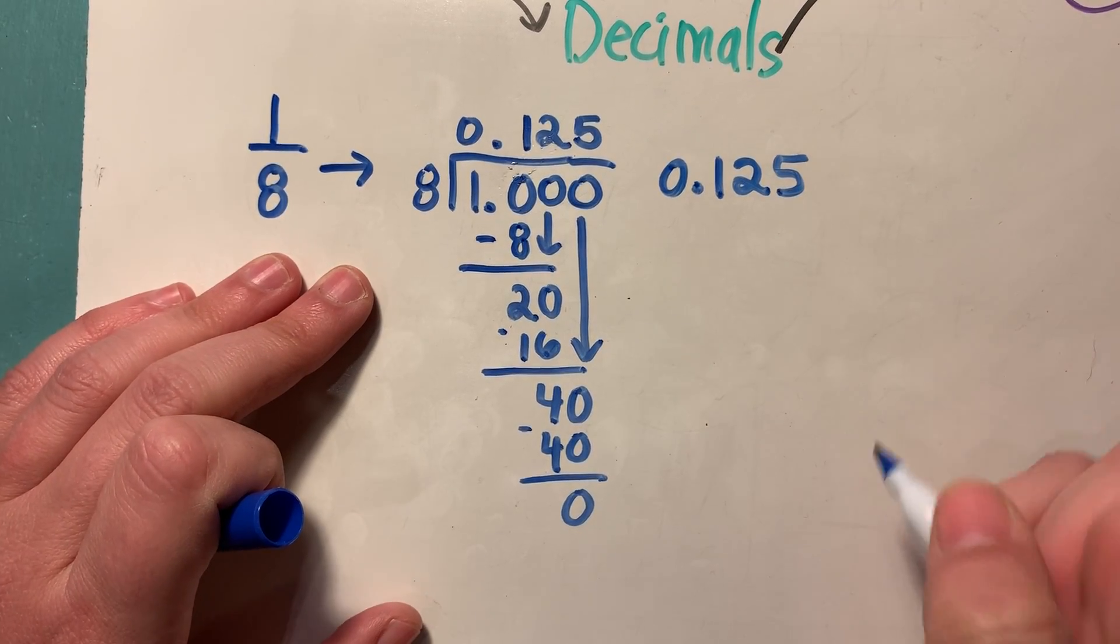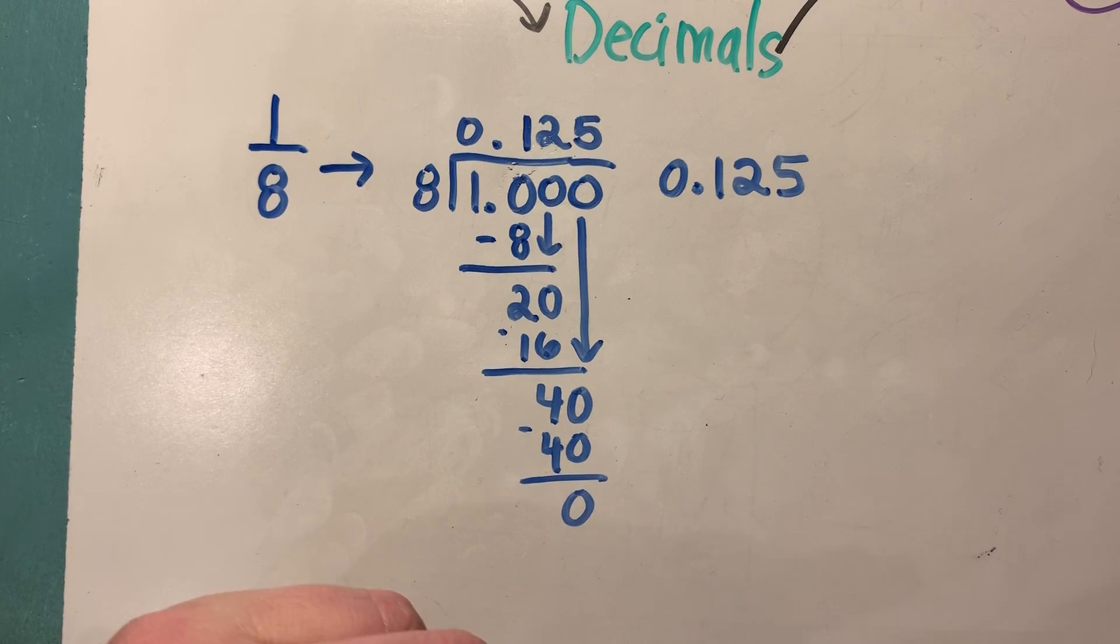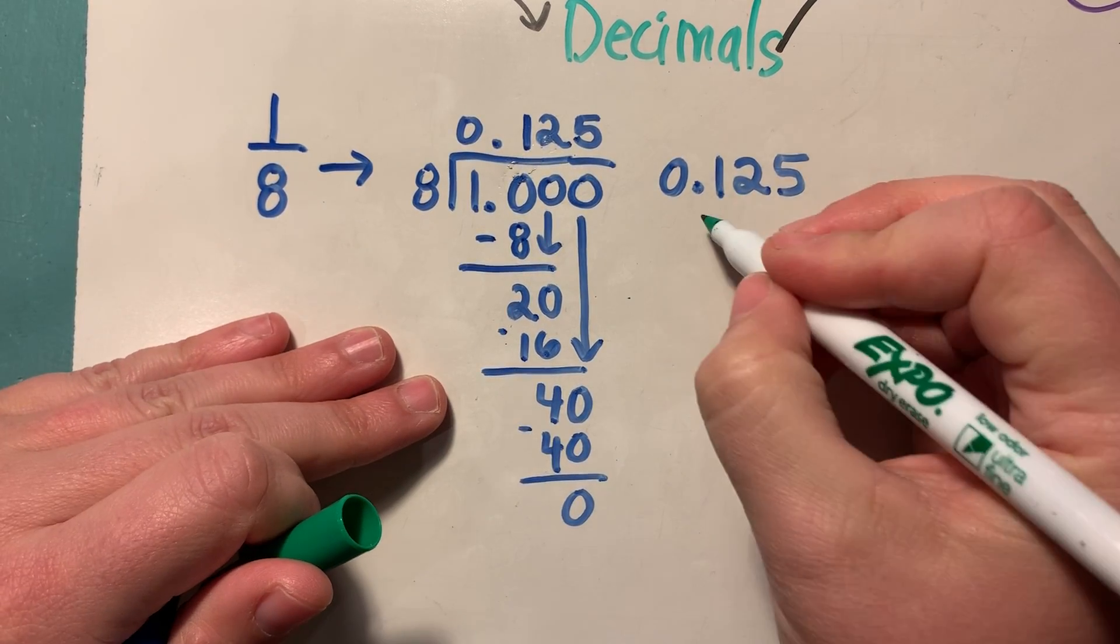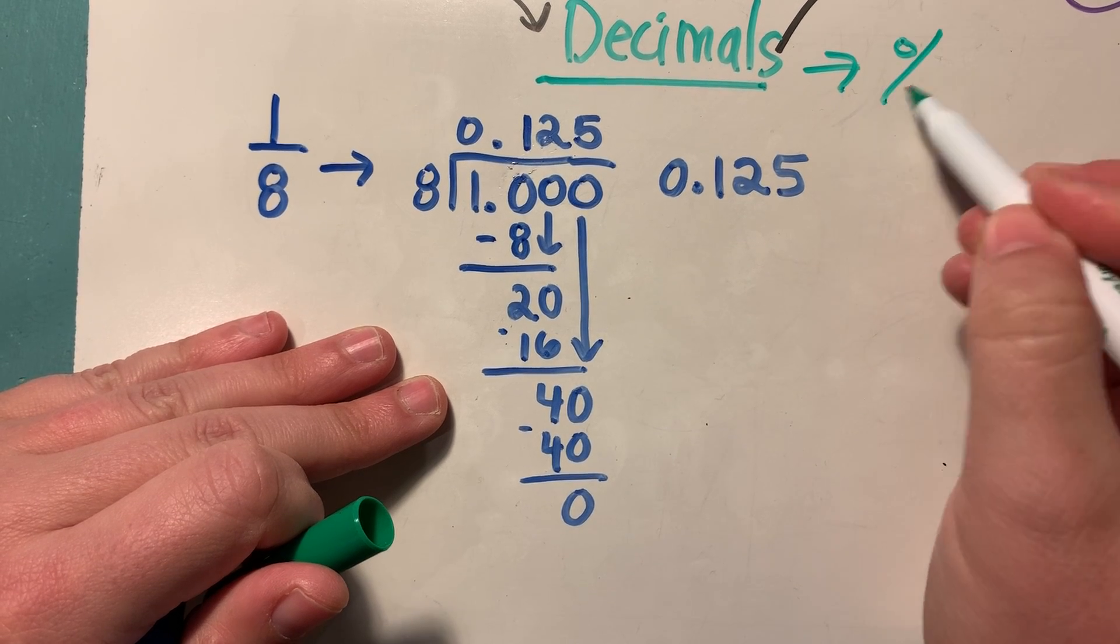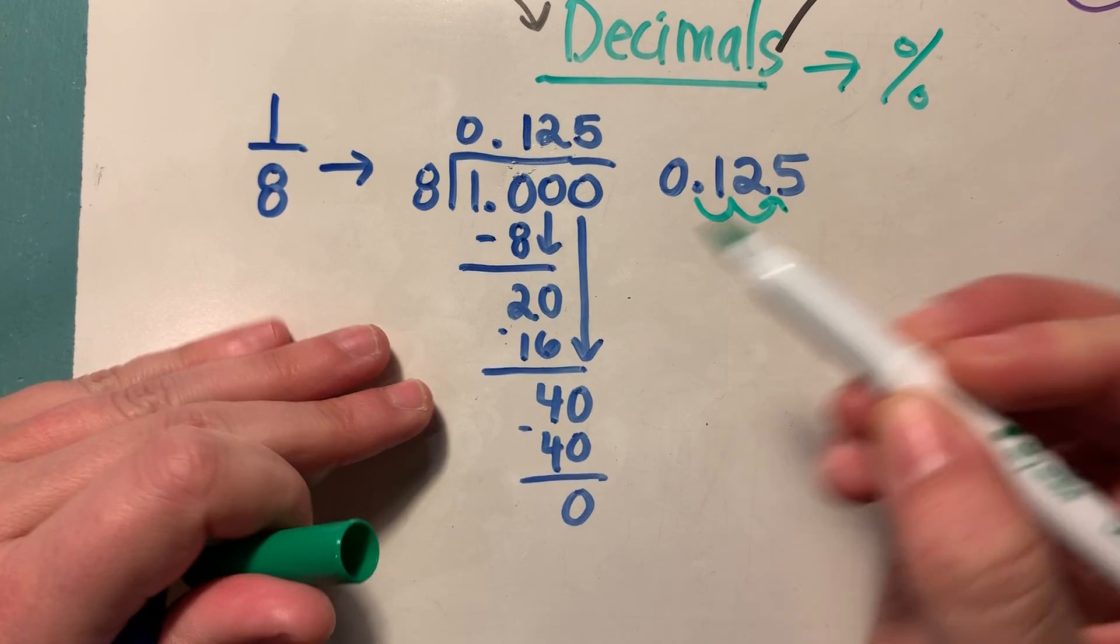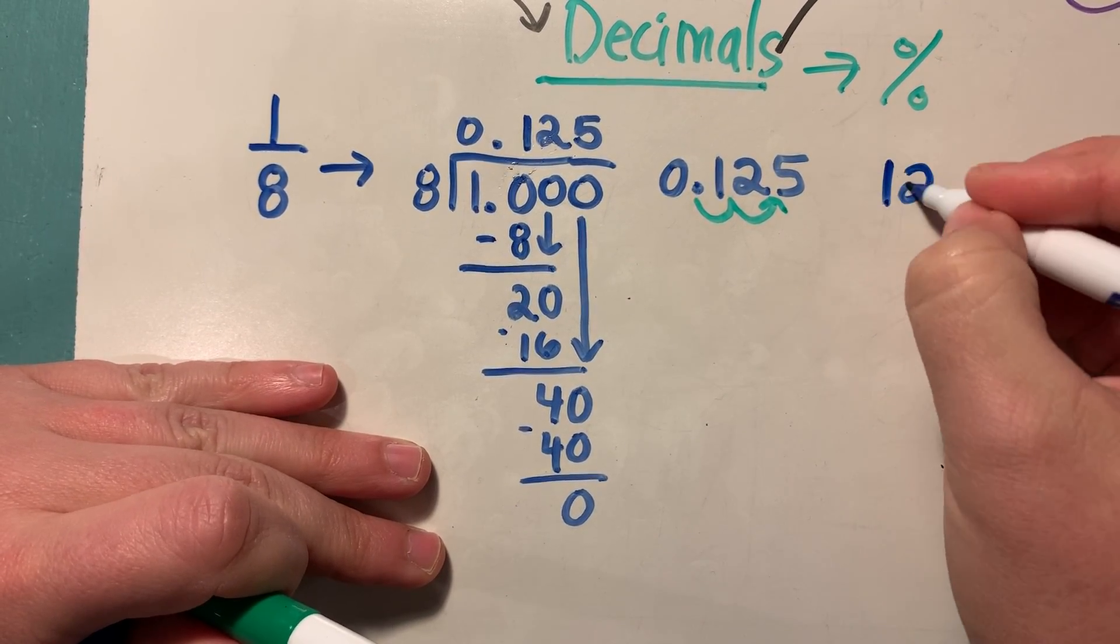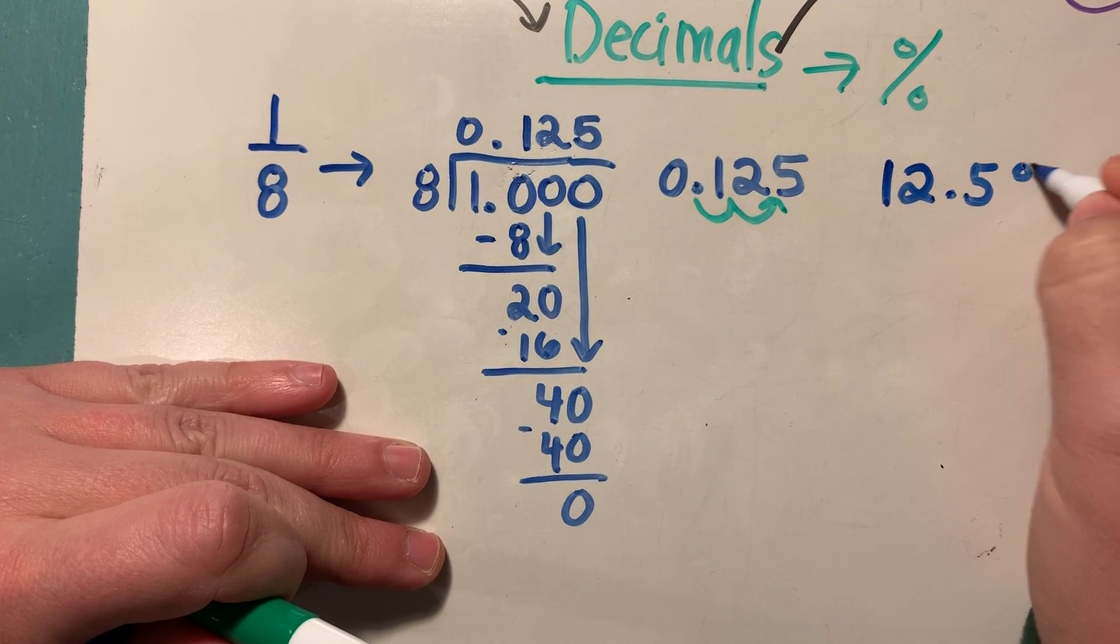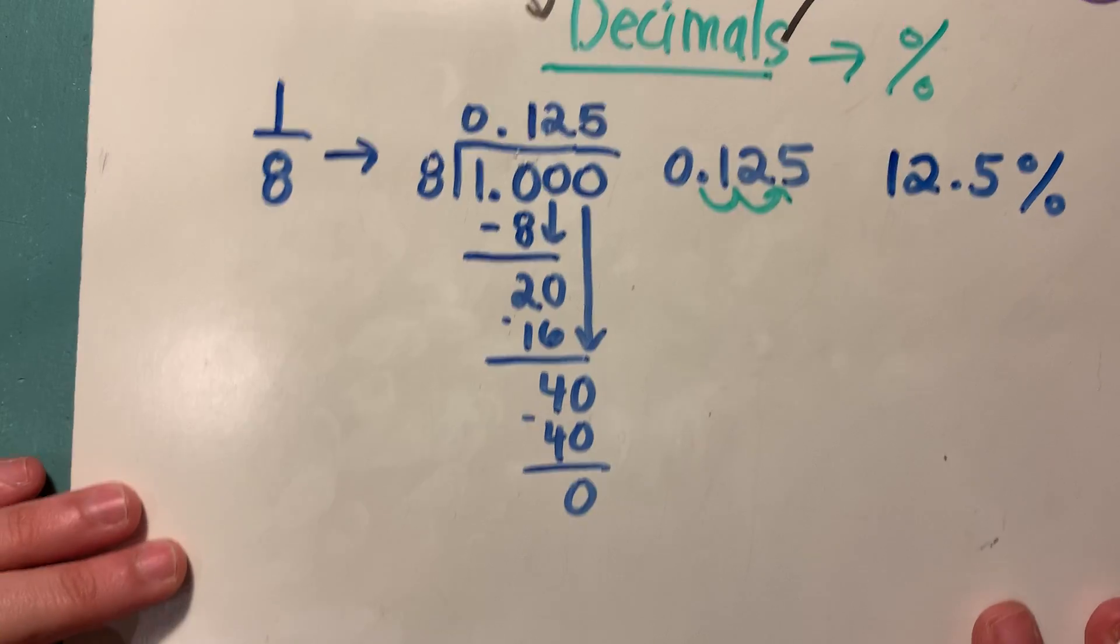So here's what I have as a decimal. I have 125 thousandths. So from here, it's so easy to turn this into a percent. Remember when you're going from a decimal to a percent, all you do is you move the decimal place over once, twice, you move the decimal place over two times. You are multiplying times a hundred. And when that happens, you get 12.5%.